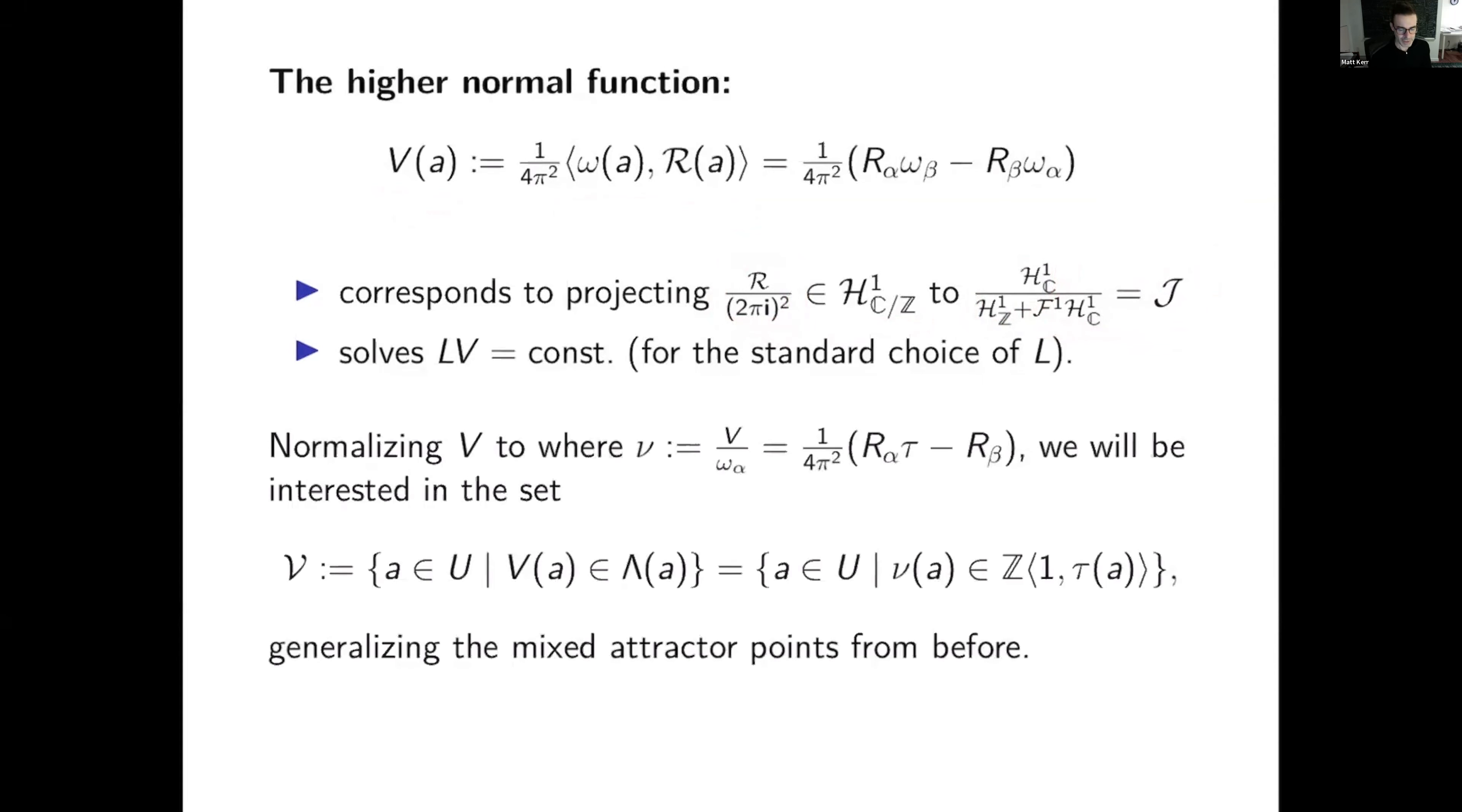So let's normalize V. This turns out to be very helpful to nu, like we did before, by dividing by the A period. And that makes it R alpha tau minus R beta. And we're interested in a set where this capital V is in the period lattice, or lowercase mu is in this version of the period lattice, Z of 1 tau. And that generalizes the mixed attractor points from before. So there's a small difference, maybe not so small, but turns out to be negligible. We can replace Z of 1 tau by Z by theorem 1 below. So points at which this takes integer values turn out to be the same thing as points at which it takes values in here. And this is more well-defined in any case, because the thing is a multi-valued function.